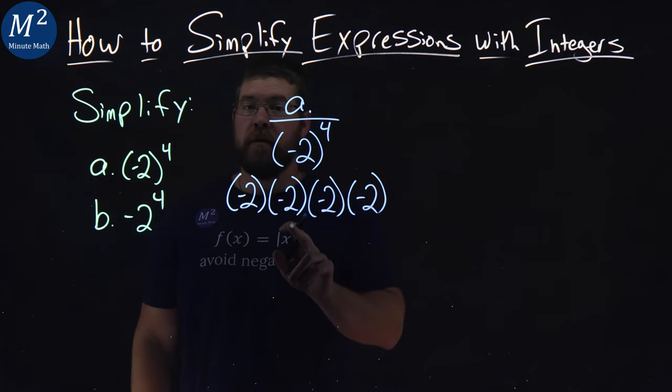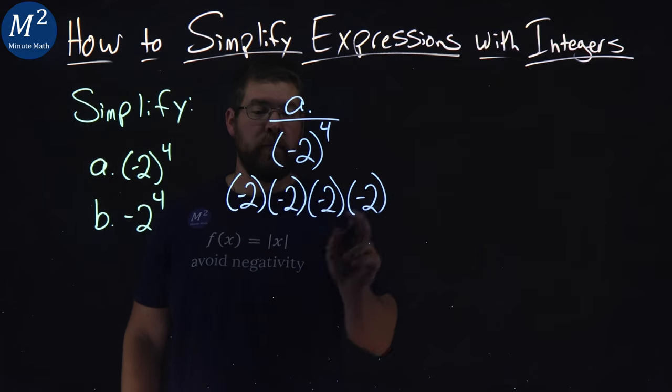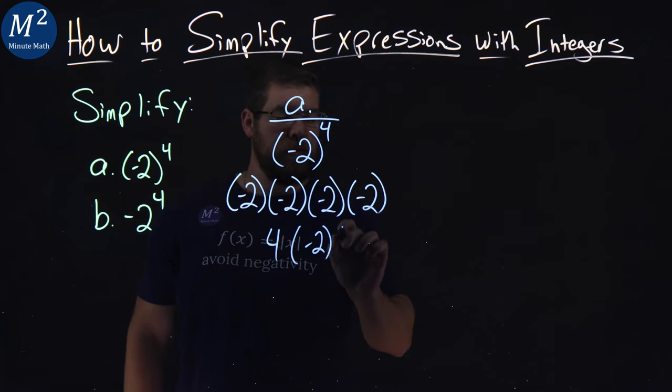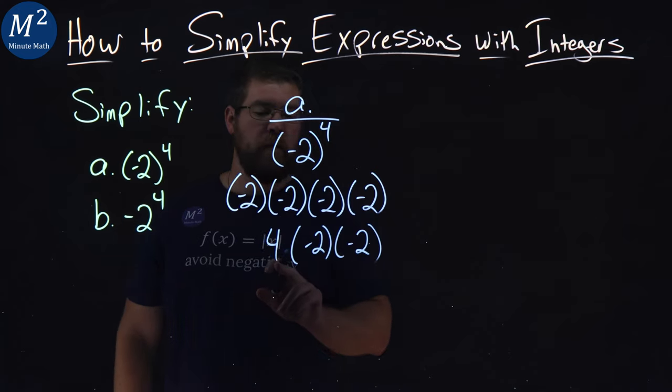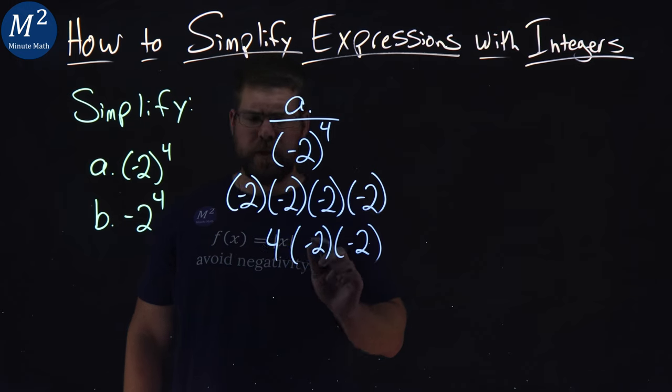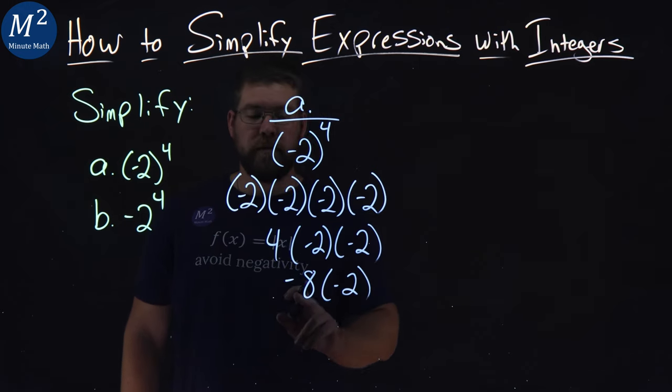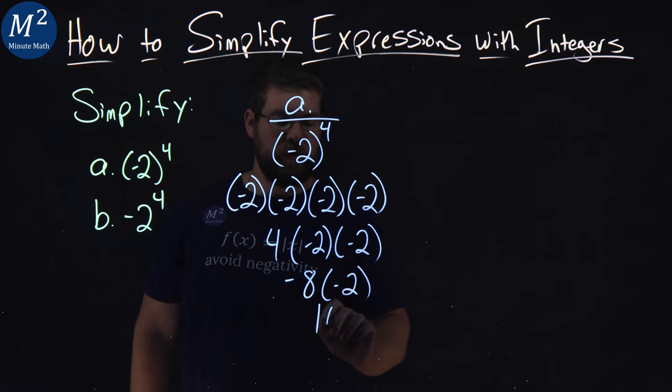Well, negative two times negative two, it's all multiplication here, left to right. Negative two times negative two is a positive four. We'll bring down the rest. Four times a negative two, that's negative eight.